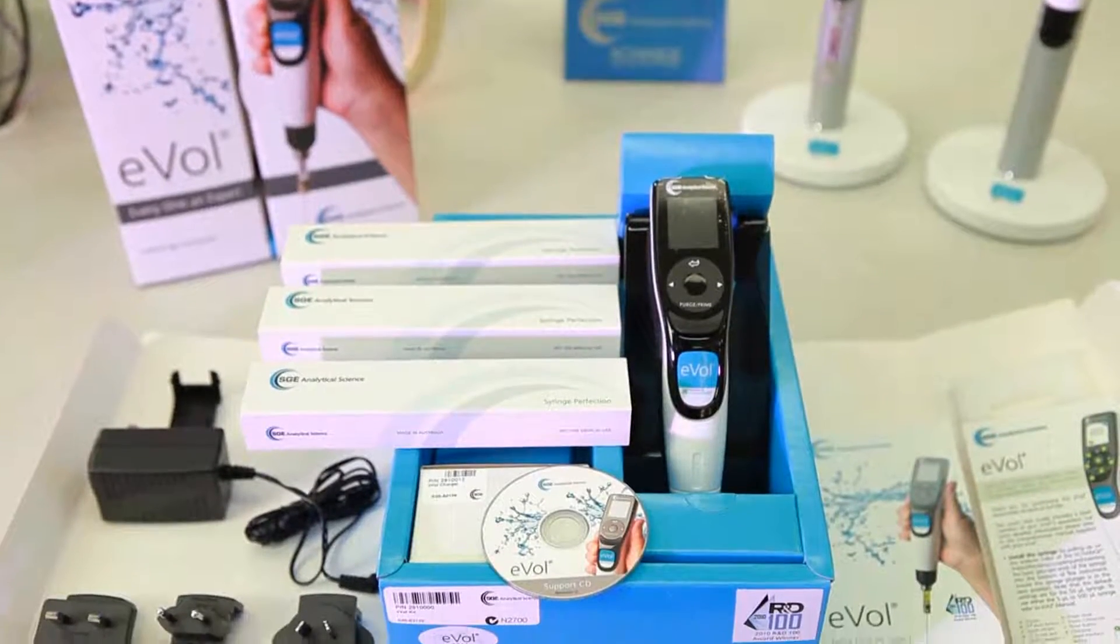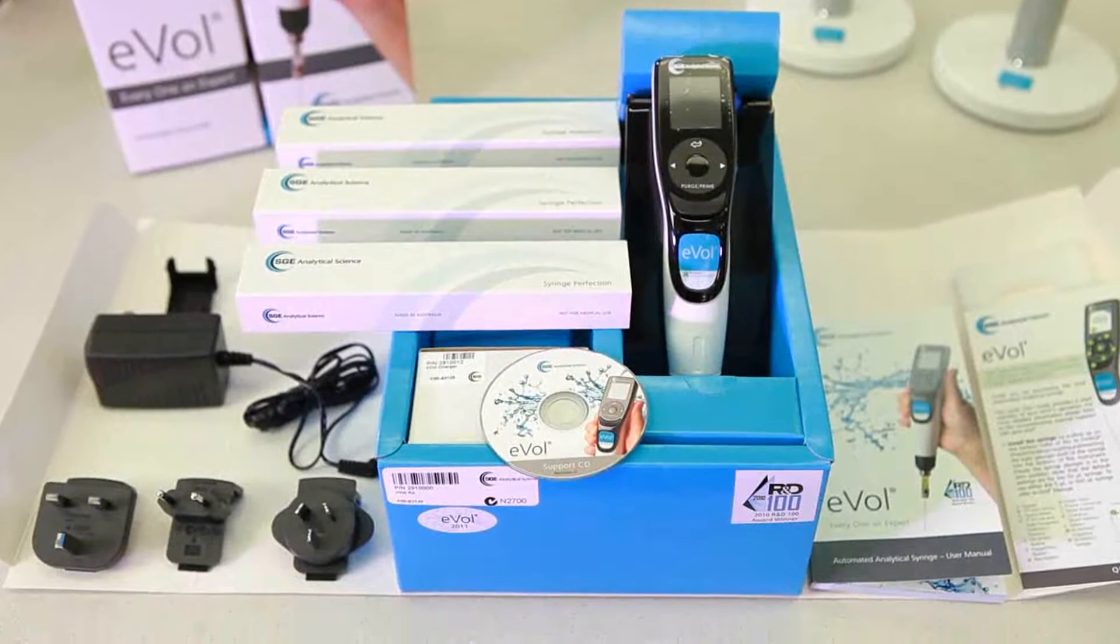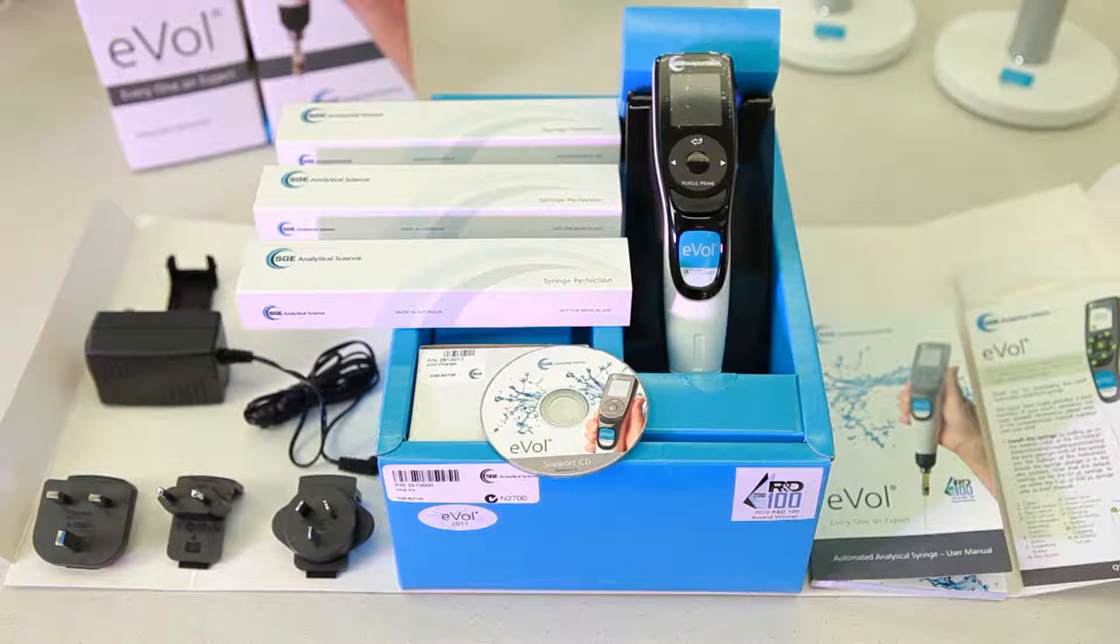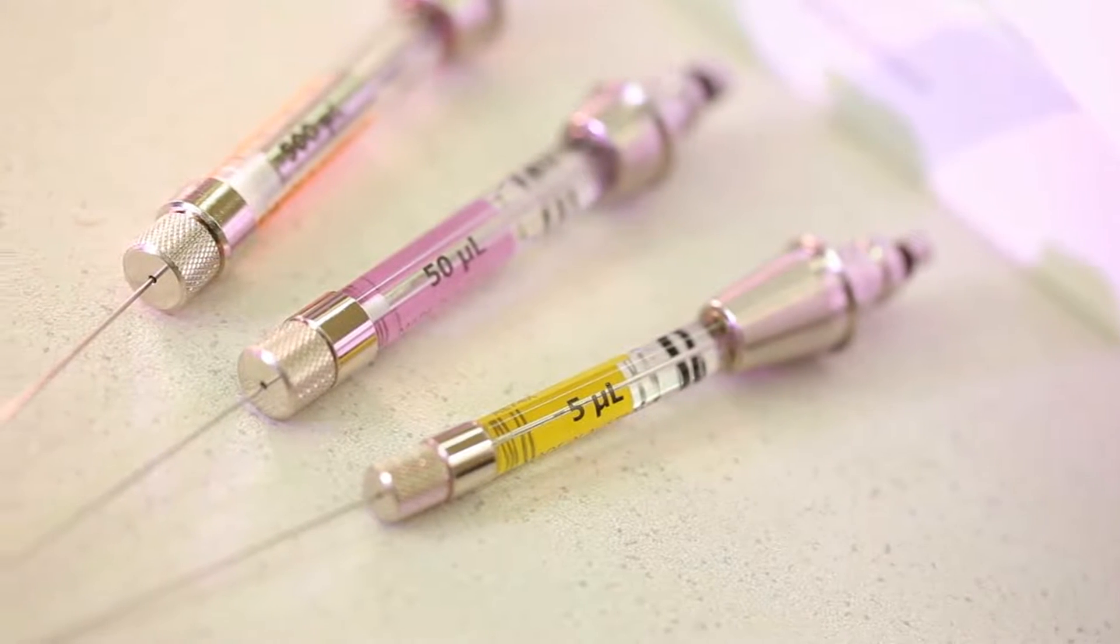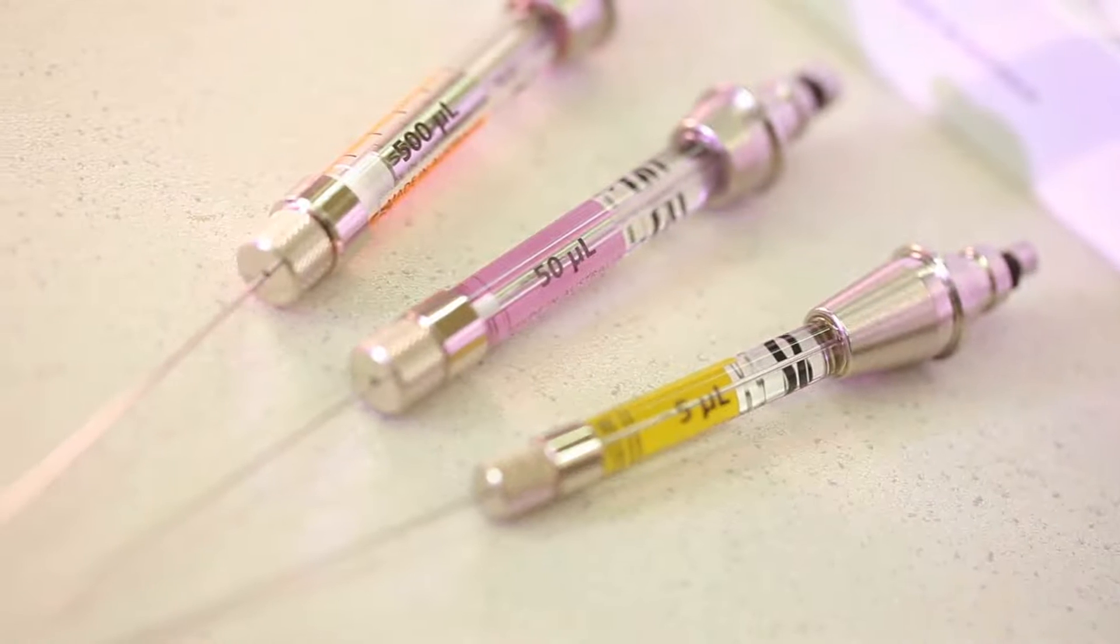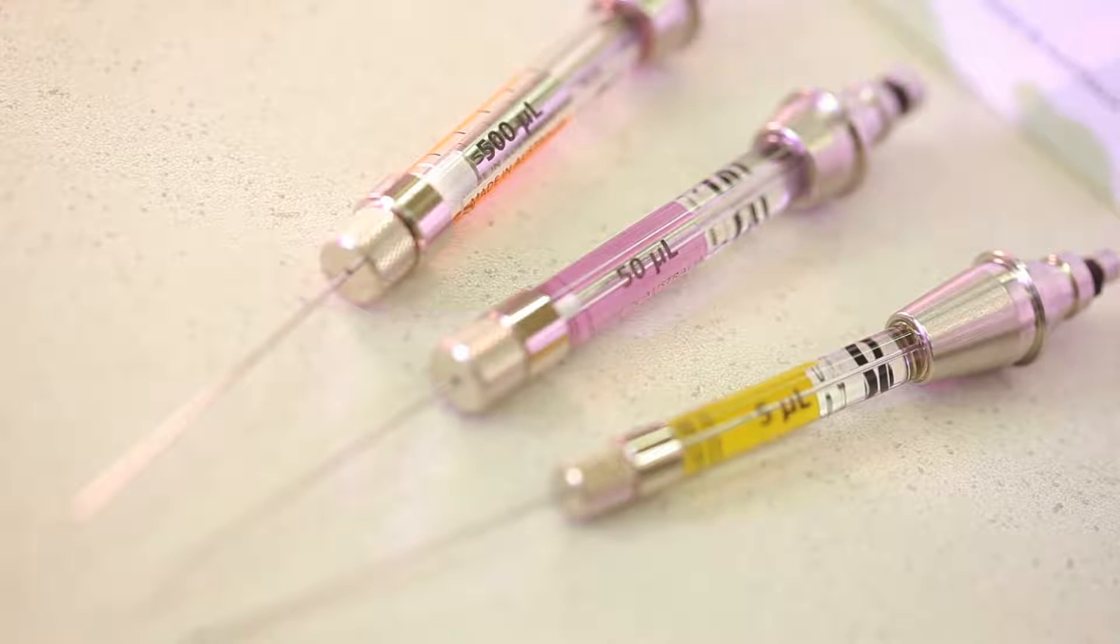The EVOL electronic syringe starter kit contains everything you need to get started, including one EVOL automated analytical syringe handle, one 5-microliter, one 50-microliter, and one 500-microliter EVOL exchange syringe, all fitted with 50-millimeter needles.